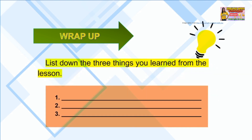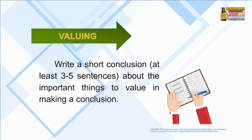To wrap everything up that we have talked about in this lesson, list down the three things you learned from the lesson. Don't forget that your conclusion is the final chance to make a good impression and to indicate why the topic is so important. Now, you have to write a short conclusion — at least three to five sentences — about the important things to value in making a conclusion.